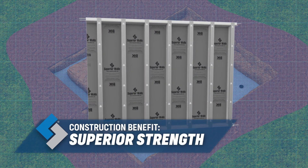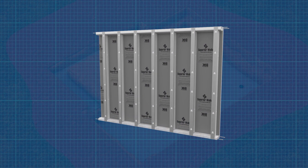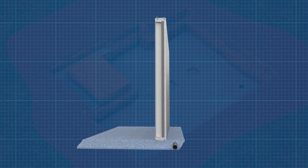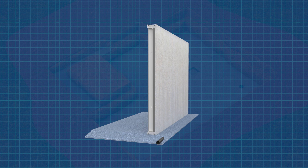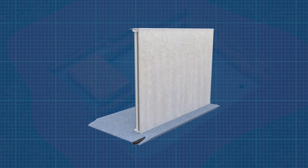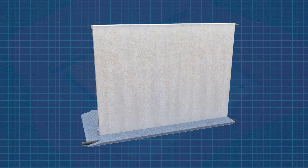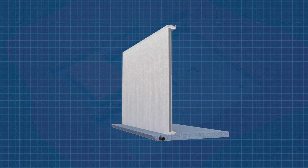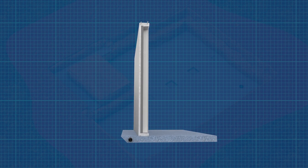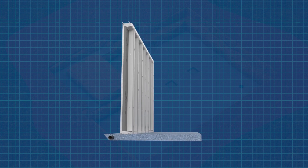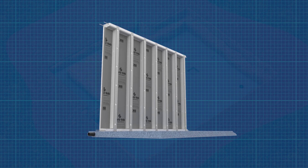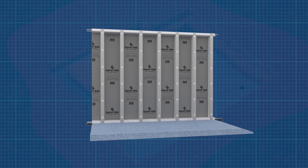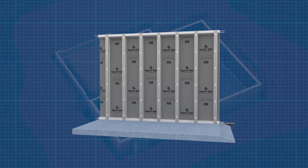Then there is superior strength. Superior Walls panels are made with a 5,000 PSI minimum steel reinforced concrete footer beam that is cast as one piece with the wall panel. When combined with a crushed stone footing, Superior Walls panels can be used on virtually any undisturbed or engineered soil with a load bearing capacity of 1,500 pounds per square foot or higher. This combination creates a stable base with superior strength for your new foundation.